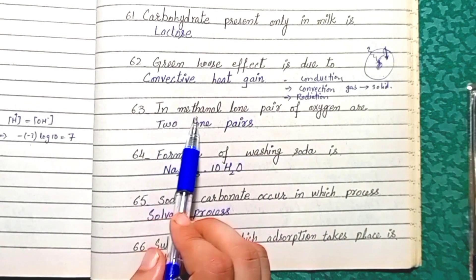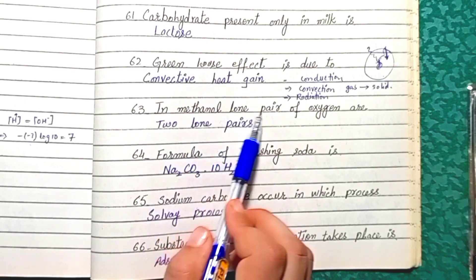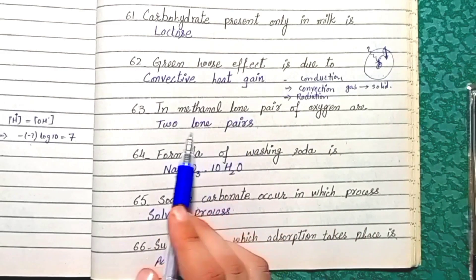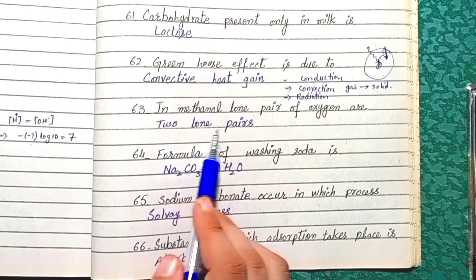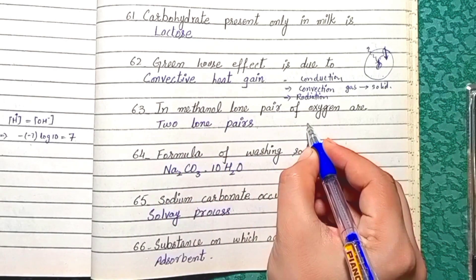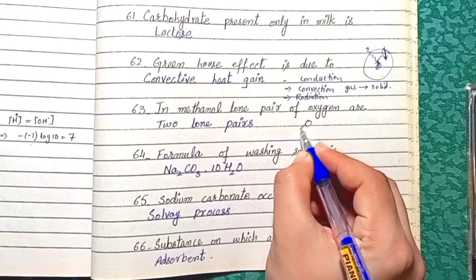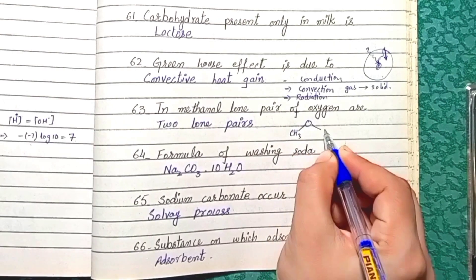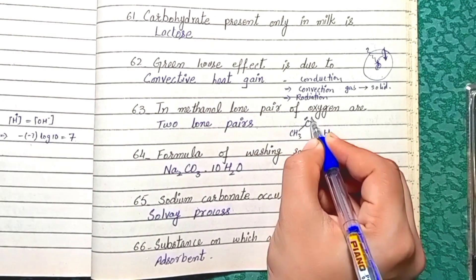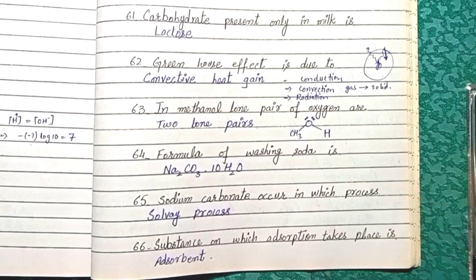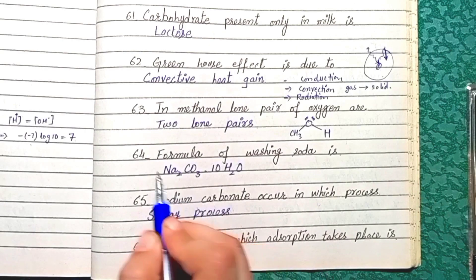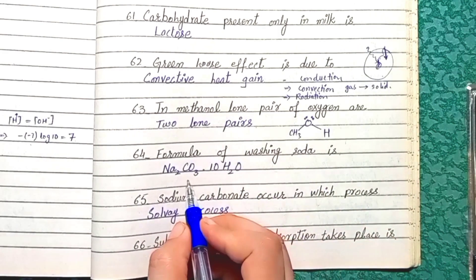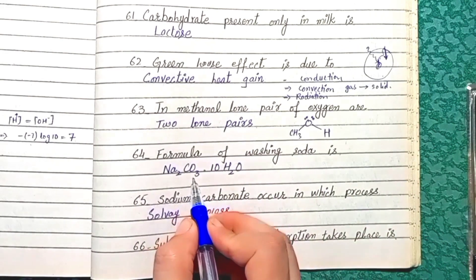Question 63: In methanol, oxygen has two lone pairs. The structure of methanol shows two lone pairs present on the oxygen atom. Question 64: The formula of washing soda is sodium carbonate decahydrate.